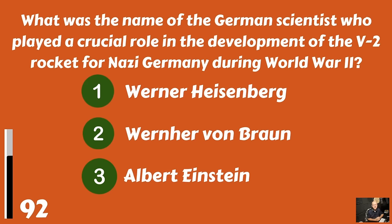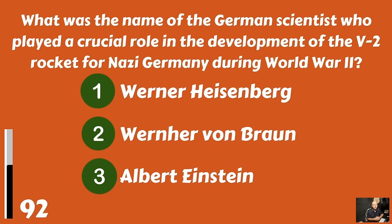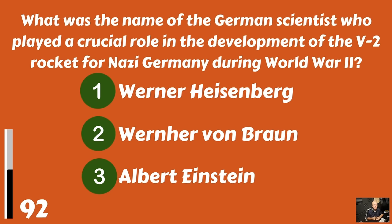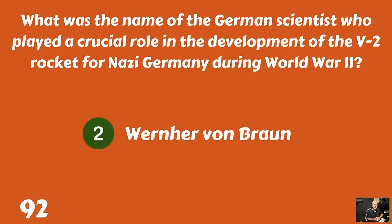What was the name of the German scientist who played a crucial role in the development of the V-2 rocket for Nazi Germany during World War II? Werner Heisenberg, Wernher von Braun, or Albert Einstein? It was Wernher von Braun.